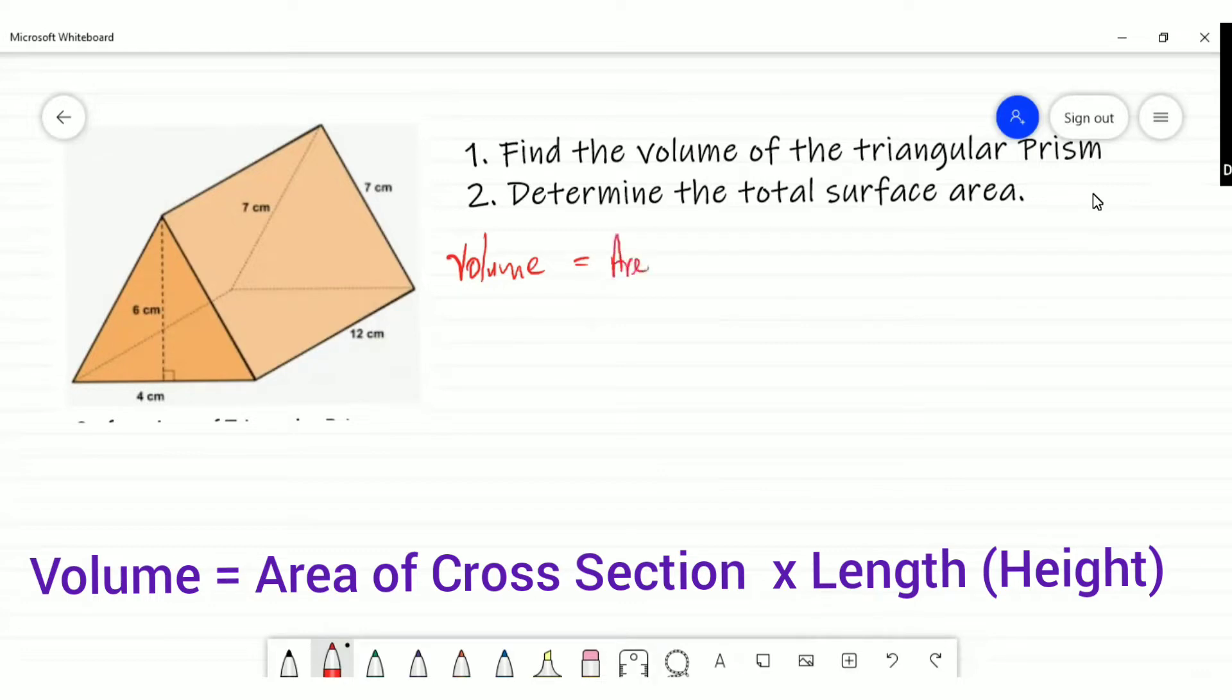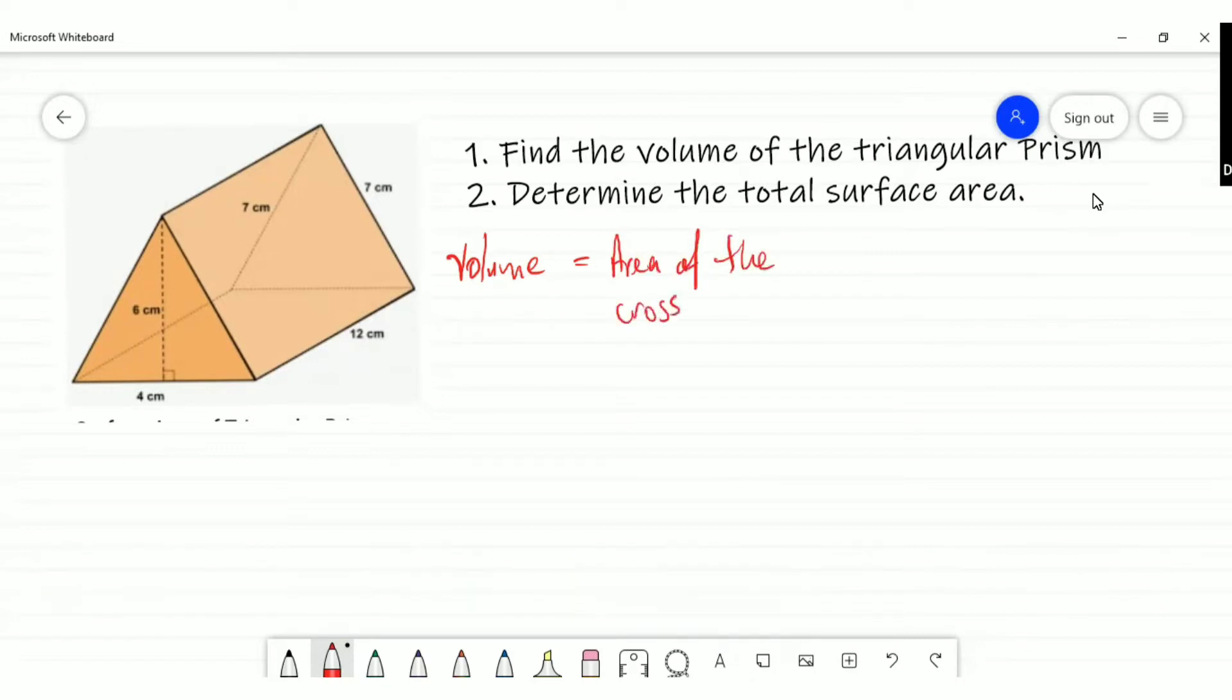Depending on the orientation of the object, I might use length or height. For example, if I'm looking at a cylinder that's vertically oriented, I'll find the area of the circle and multiply by the height.